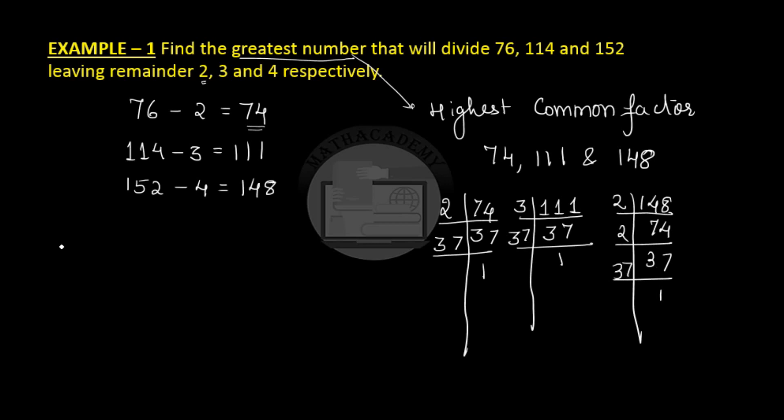How do we find the HCF by prime factorization? We write all the three numbers as the product of the prime factors. And then we take the common factors. So we see that between 74, 111 and 148 the only common factor is 37 and hence the greatest number or the HCF of these three is 37.